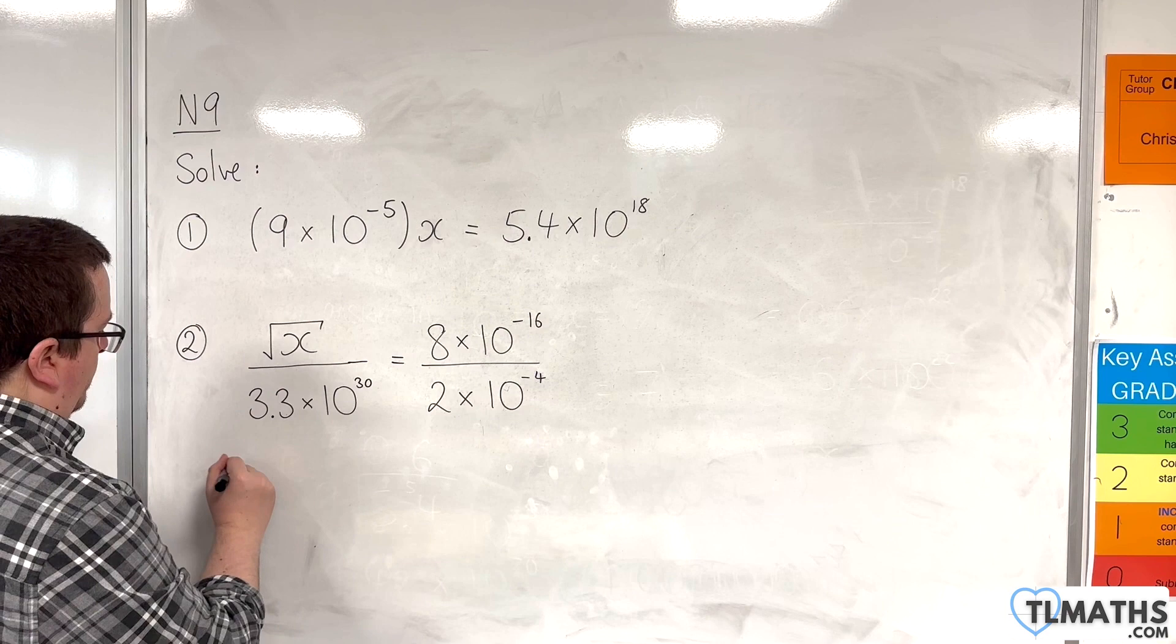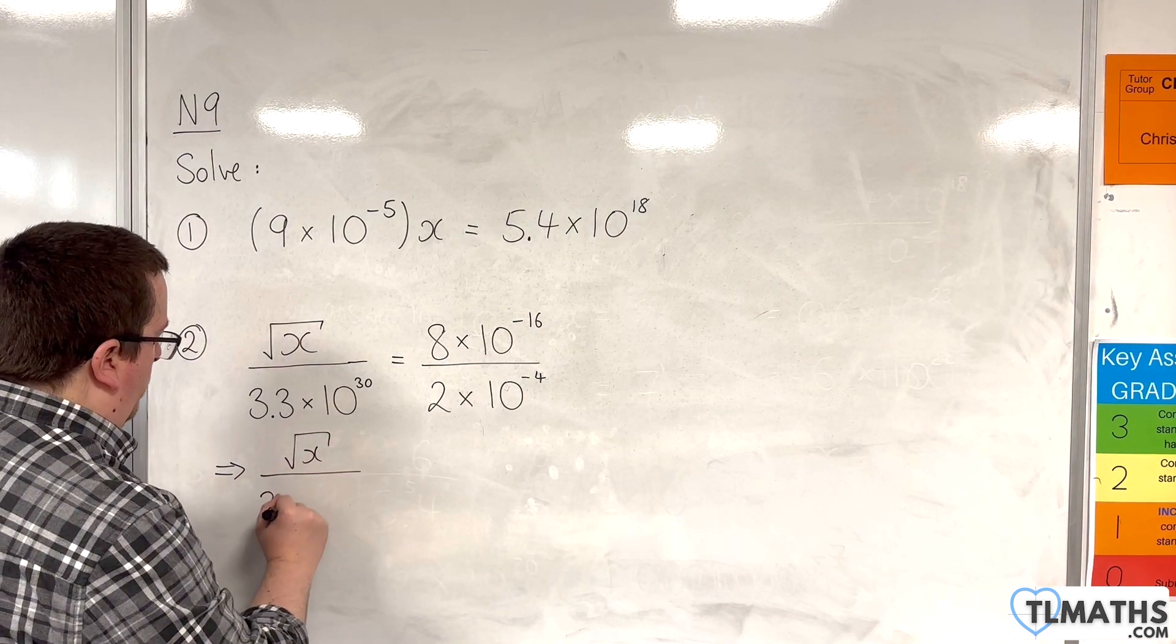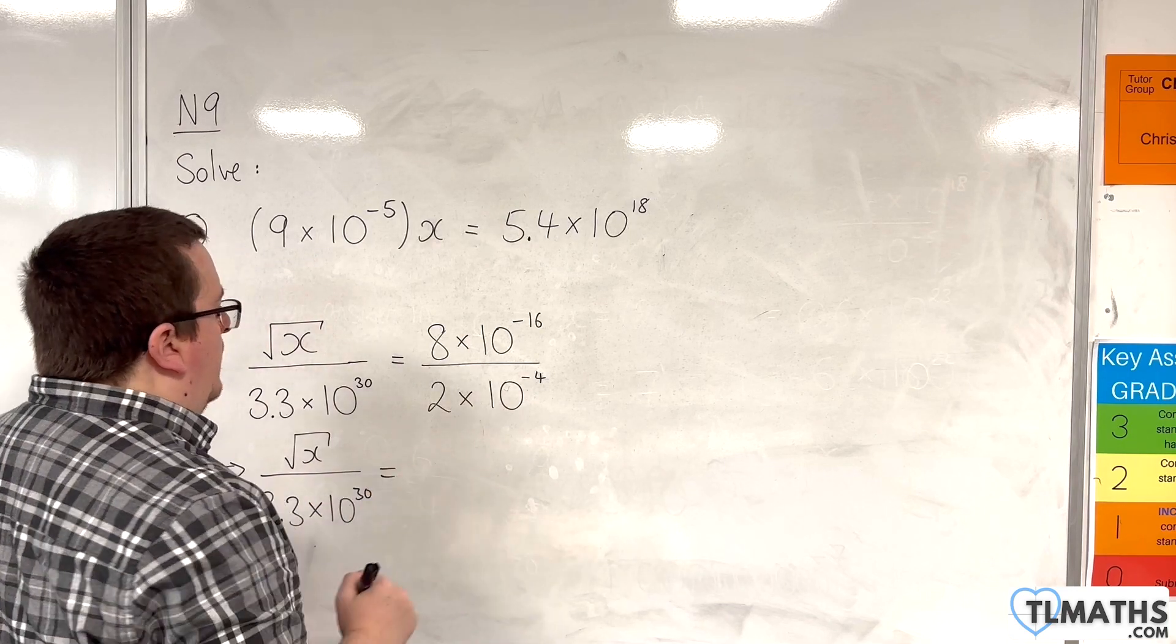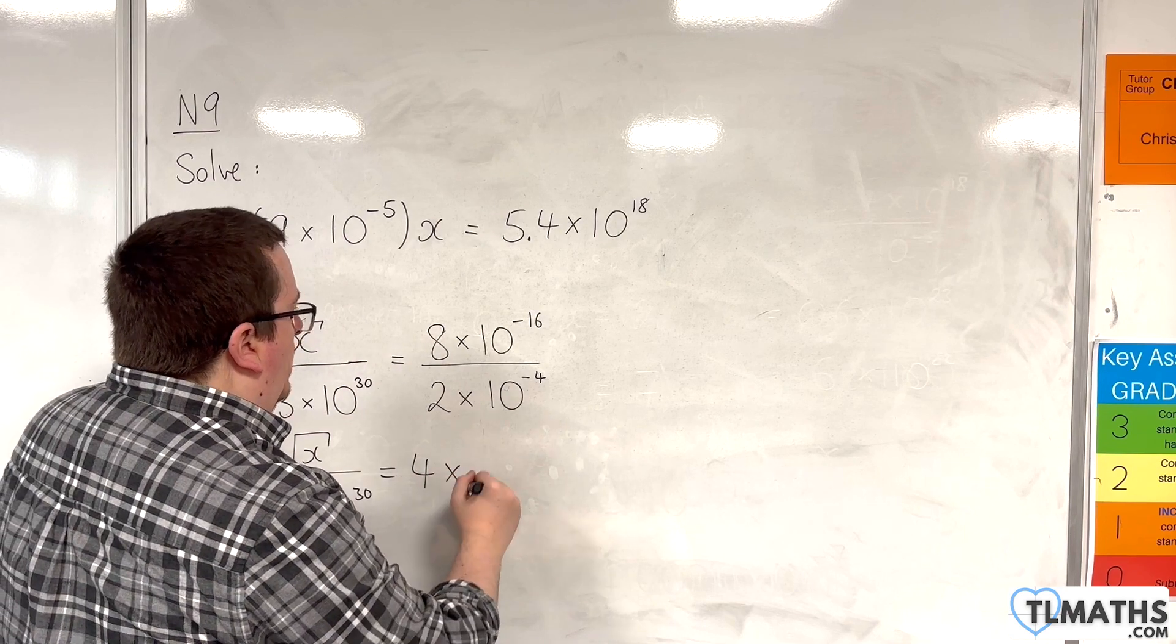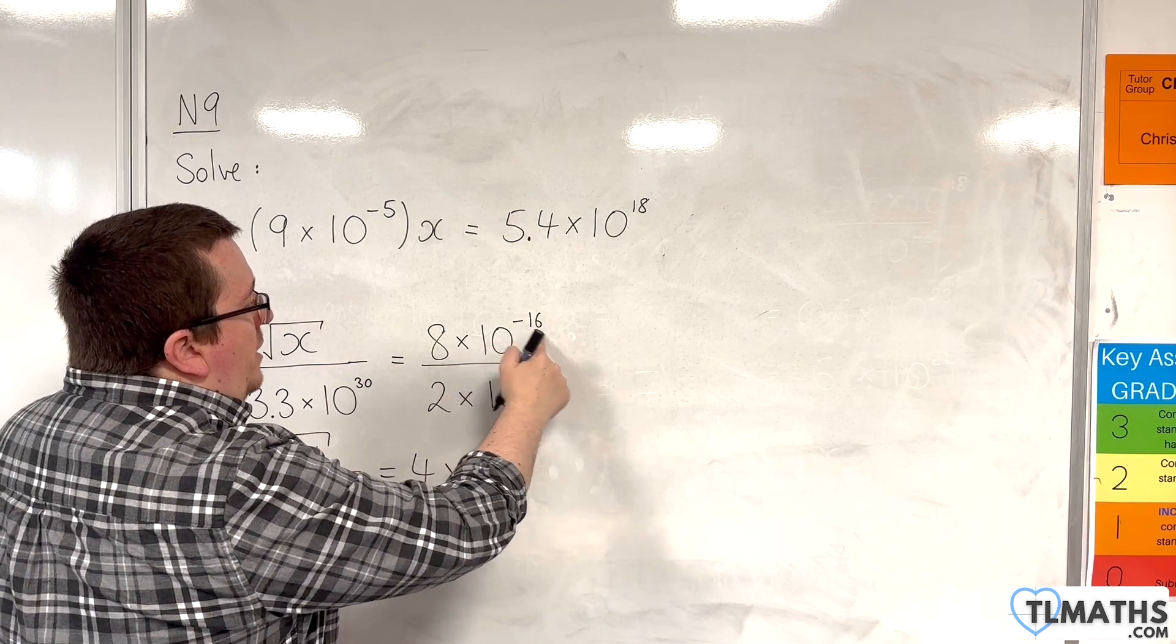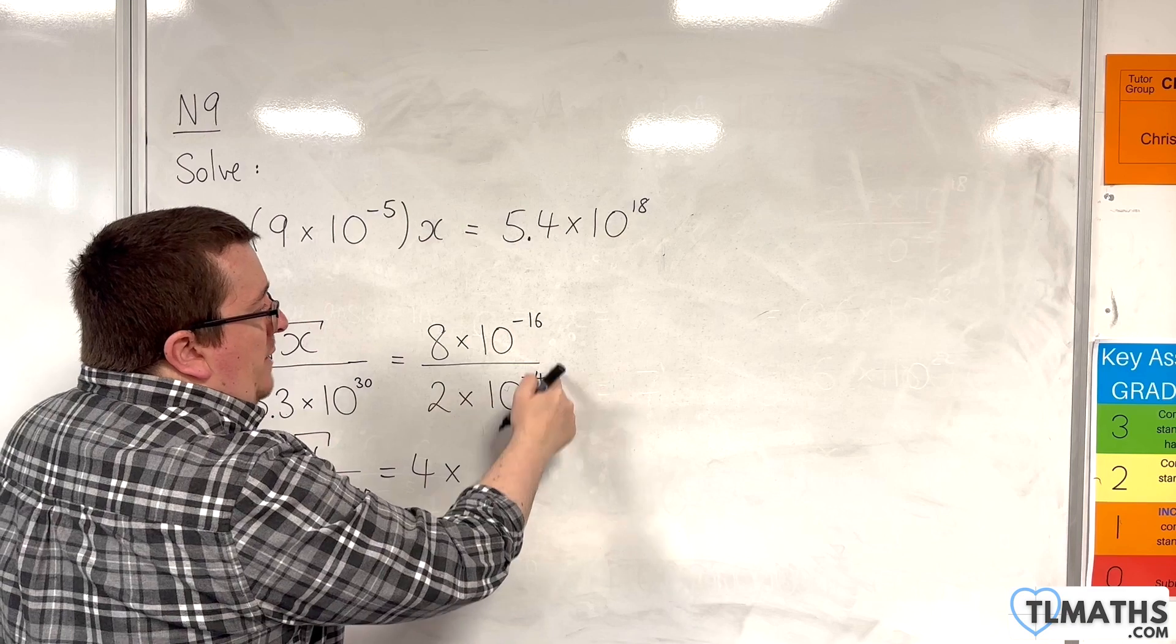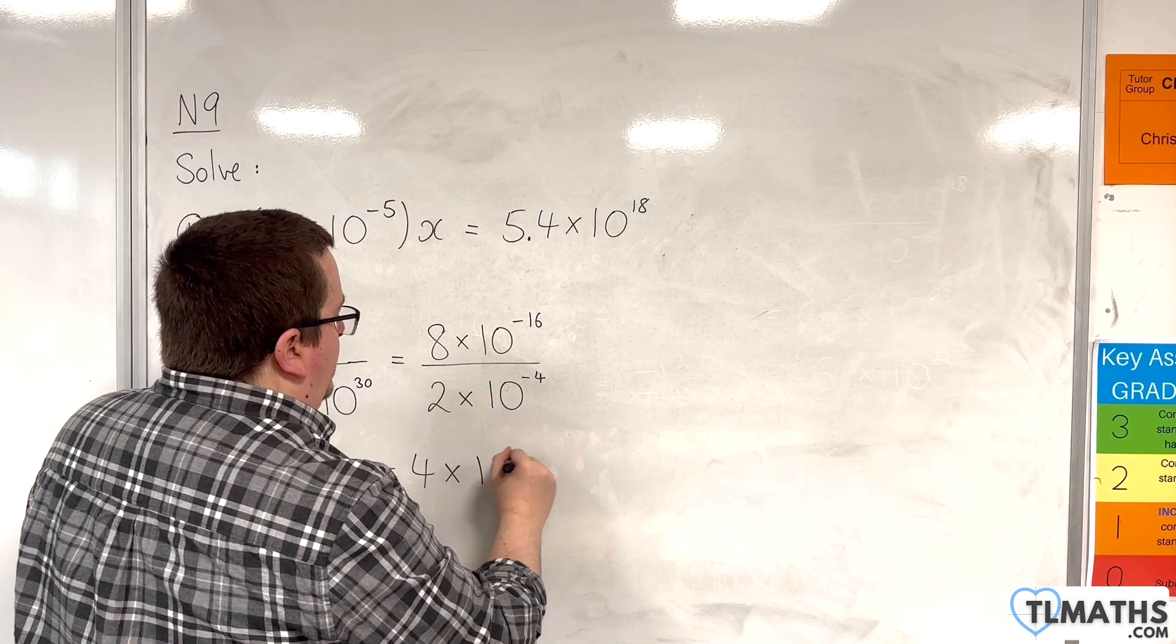Okay. So, I'm going to leave the root x over 3.3 times 10 to the 30 as it is. Now, 8 divided by 2 is 4. And then we have 10 to the minus 16 divided by 10 to the minus 4. So, we subtract the powers. Minus 16 take away minus 4 is the same as minus 16 plus 4, which is minus 12. So, 10 to the minus 12.